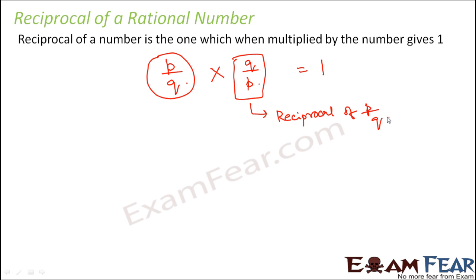Basically, whenever you have to find the reciprocal of any rational number, all that happens is the numerator becomes the denominator and the denominator becomes the numerator. And that always gives the reciprocal.